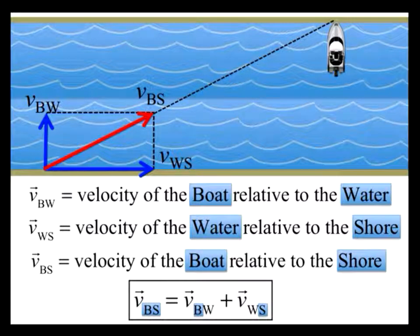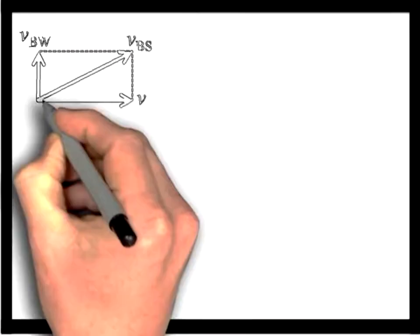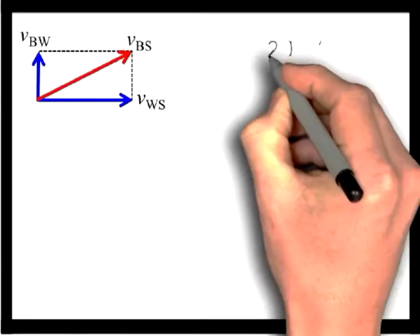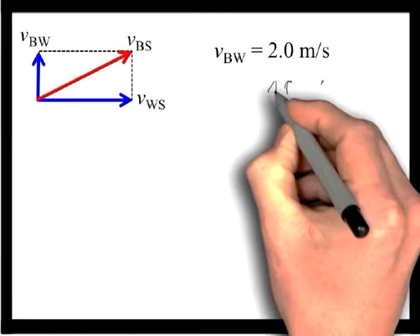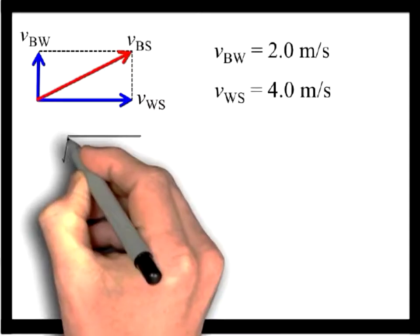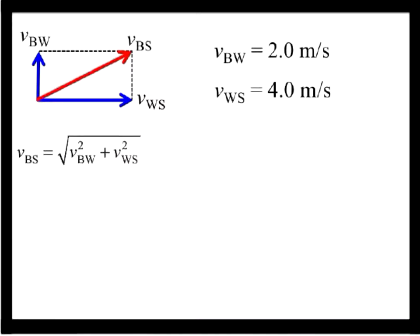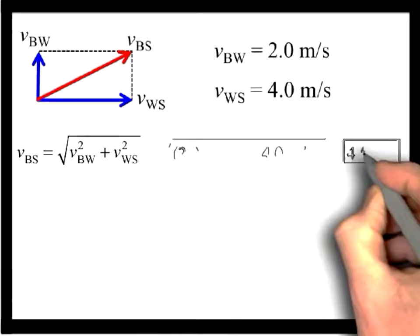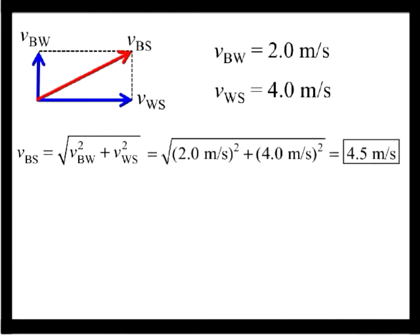Let's say we are told the velocity of the boat relative to the water is 2.0 m per second, and the velocity of the water relative to the shore is 4.0 m per second. Since the vectors VBW and VWS are perpendicular to each other, we can use the Pythagorean theorem to calculate the magnitude of VBS. We find the magnitude is equal to 4.5 m per second.